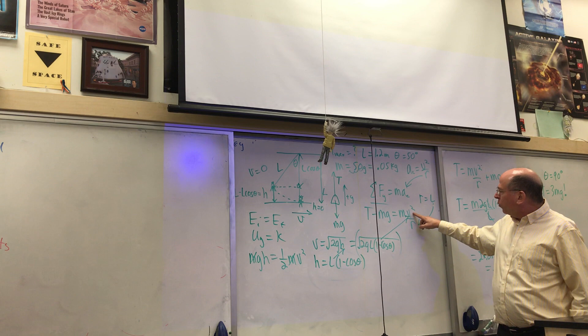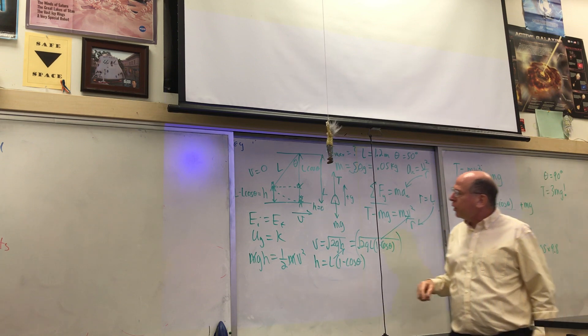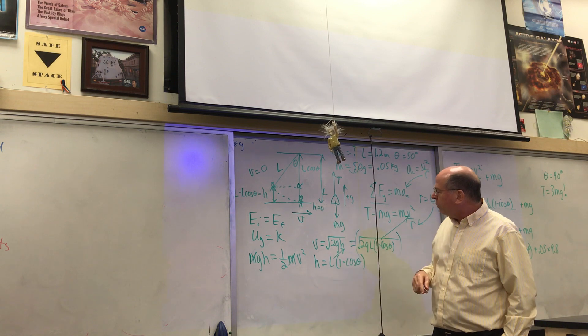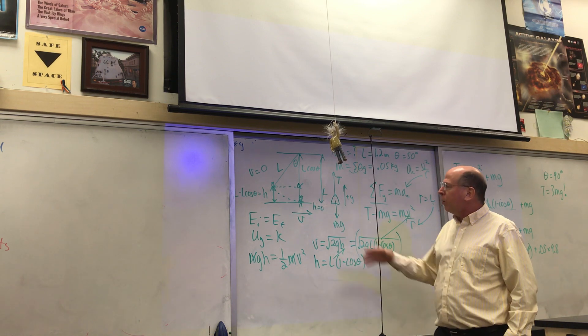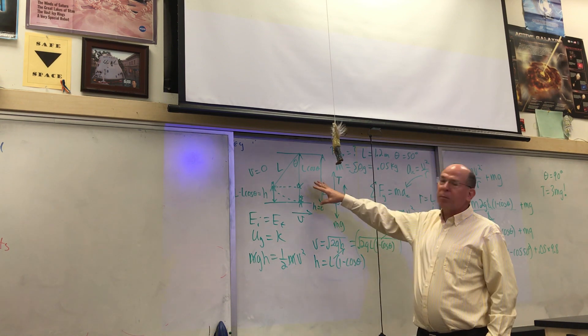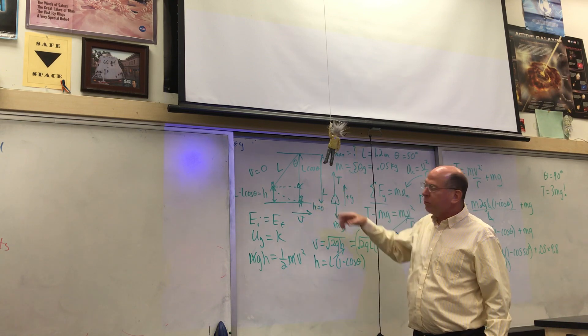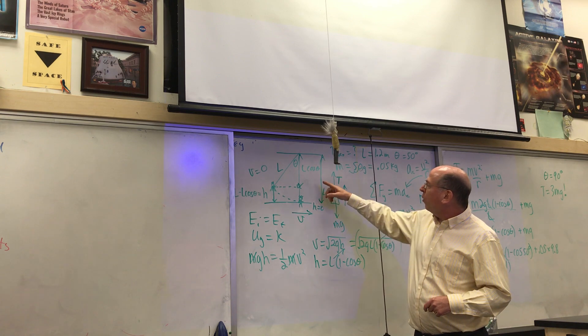The speed we can use conservation of energy, and so that looks simple at first. But when you get to speed equals square root of 2gh, we're not given H. So it's a difficult thing, and it's good to expose students to this multiple times. They really have to work on this on their own to figure this out.